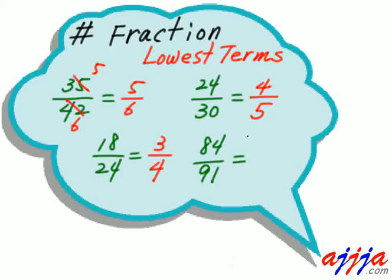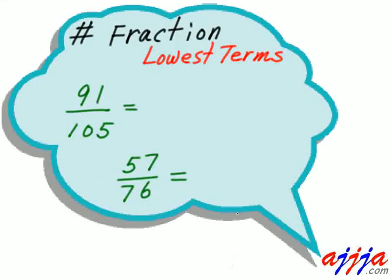What about this one? Ninety-one — very hard to see. Ninety-one minus eighty-four is seven. Seven goes here and here — ninety-one divided by seven is thirteen, and eighty-four divided by seven is twelve. So easy.